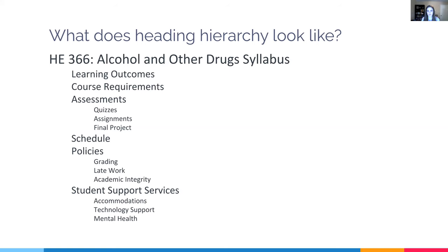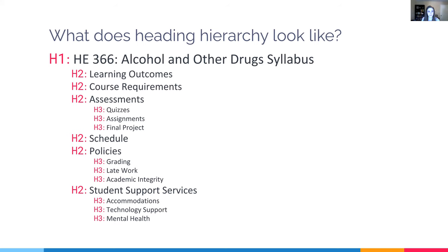Here's an example of headings in a syllabus. You can see the visual hierarchy is clear — the syllabus for HE366, with each indented subsection belonging to the item above it. We want the same hierarchy communicated to screen readers so they can create an accurate table of contents for users. We do that by choosing the correct heading levels: H1 for the page as a whole, with H2 and H3 representing increasing subsections.